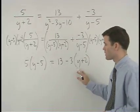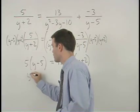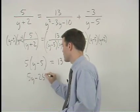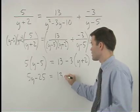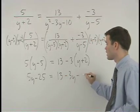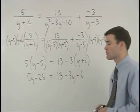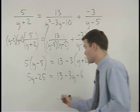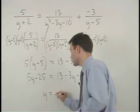Distributing through the parentheses, we have 5y minus 25 equals 13 minus 3y minus 6. Solving from here, we find that y equals 4.